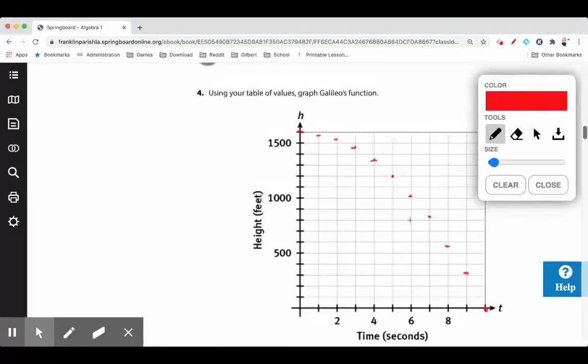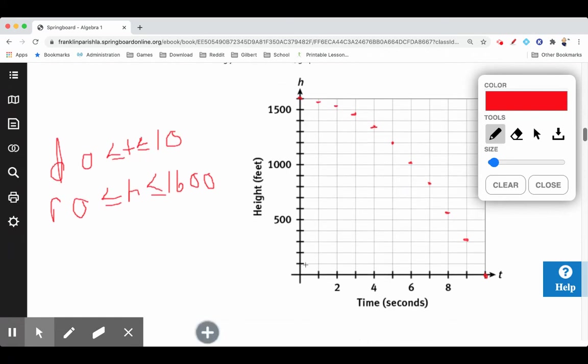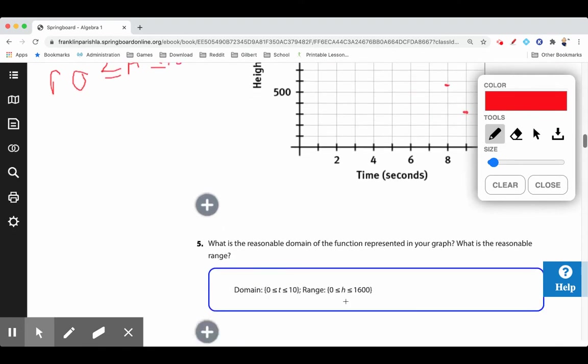Let's think about what the reasonable domain is for this graph. Reasonably, it's from 0 to 10. The domain is going to be: zero is less than or equal to the time t, which is less than or equal to ten. A reasonable range is from 0 to 1600: zero is less than or equal to the height h, which is less than or equal to 1600. That would be reasonable domain—time, your independent variable—and range—height, your dependent variable. How high you are depends on how much time has passed.